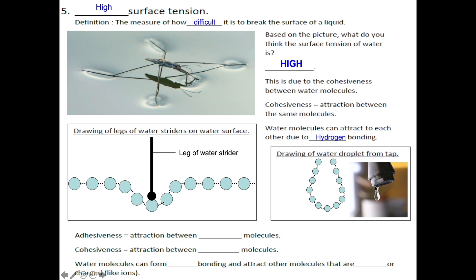As you can see in this image, the surface of the water will hold and not break until the weight of the water becomes too great, causing the surface to break and the water droplet to fall off. This is again due to the cohesiveness between water molecules. Water molecules on the surface of the droplet are connected to each other via hydrogen bonding, thus contributing to the strength of the surface of water.